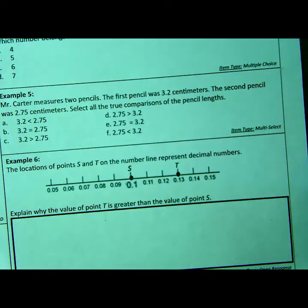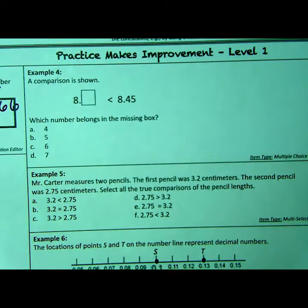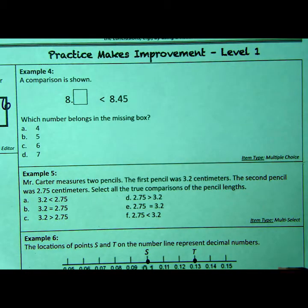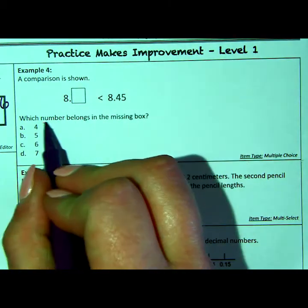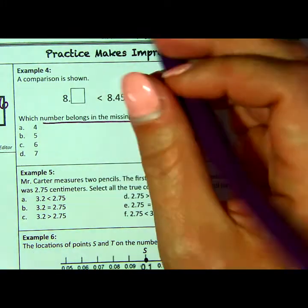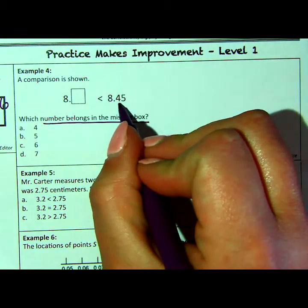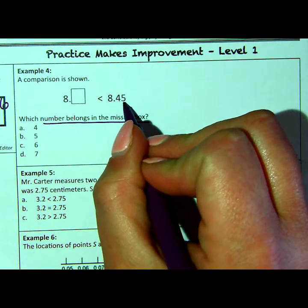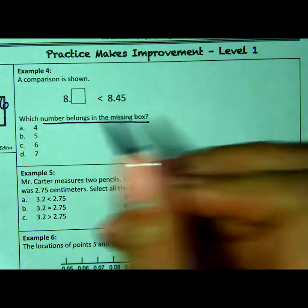Moving right along, example number 4. A comparison is shown. We have to choose the number that belongs in the missing box. So we can see here we have $8.45 or 8 and 45 hundredths, correct? And we have to choose a number.